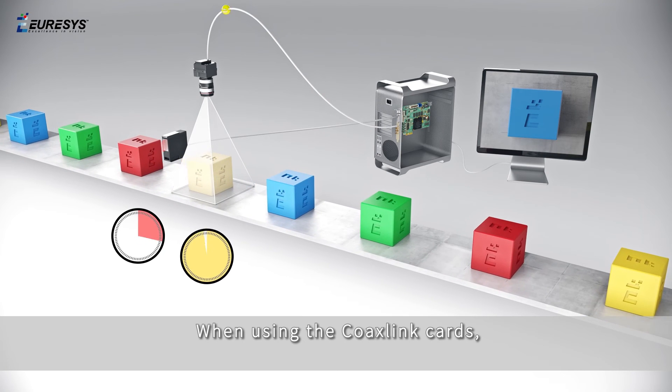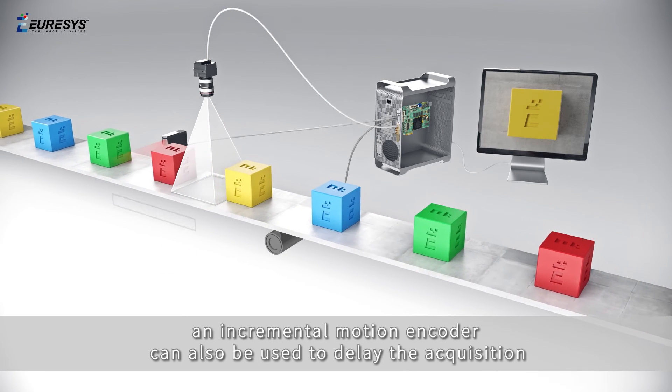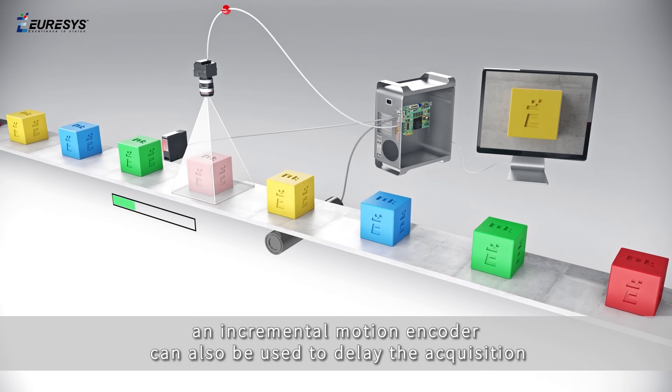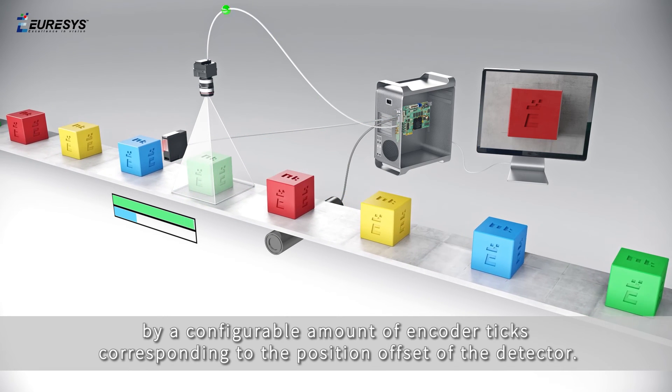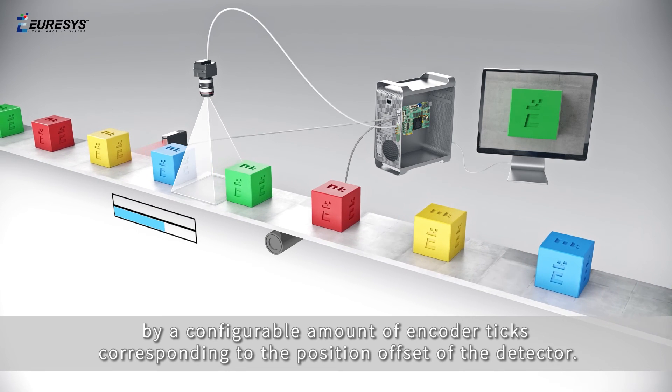When using the coax link cards, an incremental motion encoder can also be used together with the IO Toolbox Delay Tool to delay the acquisition by a configurable amount of encoder ticks corresponding to the position offset of the detector.